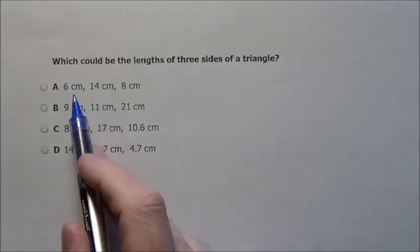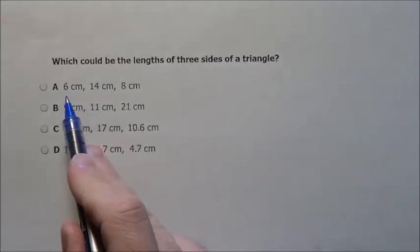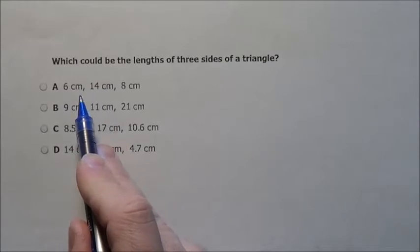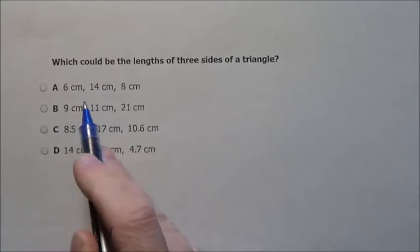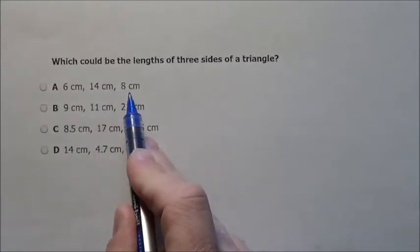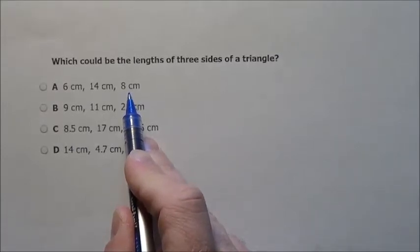To do this, all we have to do is remember that if we take the first two sides, we subtract them and add them, and the third side better fit between there. If it doesn't fit between there, it cannot be a triangle.